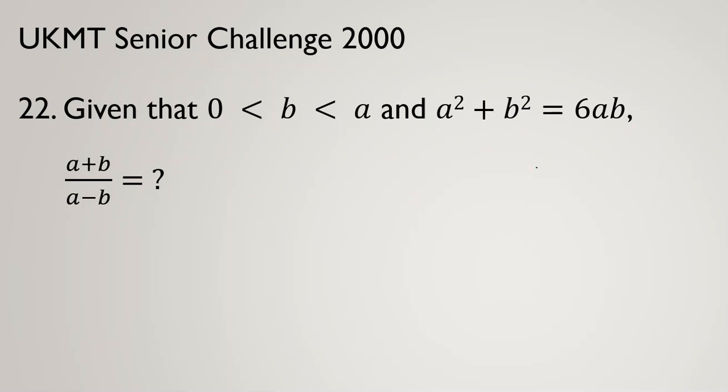Pause the video and try it yourself. If you know the identity, (a+b)² = a² + b² + 2ab. We can also write (a-b)² = a² + b² - 2ab. You should memorize these two identities.